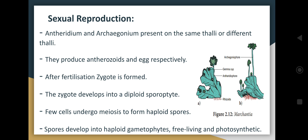In sexual reproduction, the thallus consists of antheridium and archegonium, either on the same thallus or on different thalli. The antheridium produces antherozoids and the archegonium produces eggs. After fertilization, a zygote is formed, which develops into a diploid sporophyte. A few cells undergo meiosis to form haploid spores, which then develop into a free-living, photosynthetic haploid gametophyte.